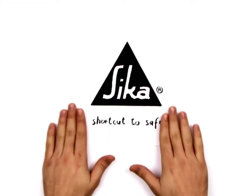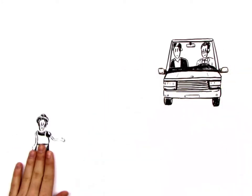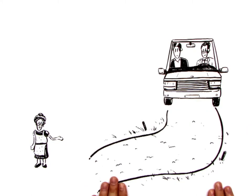No shortcut to safety. This is Mike. Together with his brother David, they are on their way to visit their grandmother, who lives in the countryside.